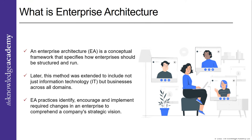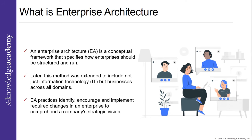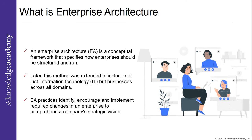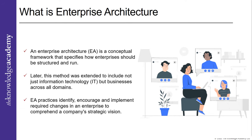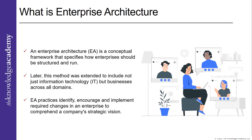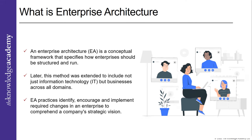EA practices identify, encourage, and implement required changes in an enterprise to comprehend a company's strategic vision. Then, everything from business operations to supporting technology, partner relationships, various types of infrastructure, hiring and training, and anything else crucial is aligned to improve the company's performance.